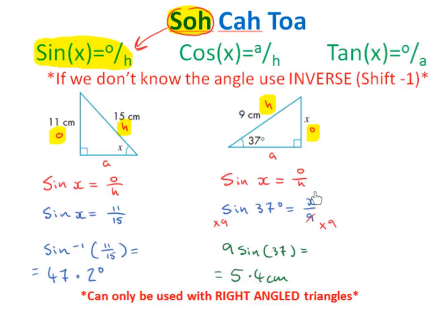So we have sine of 37 degrees equals x over 9. To get x on its own, we multiply both sides by 9, giving us 9 sine of 37, which equals 5.4 centimetres to one decimal place. It's very important to put the 9 in front of the sine, not at the end — because if we had sine of 37 multiplied by 9, we would end up multiplying the 37 by 9, which is not what we want. We want 9 multiplied by sine of 37.